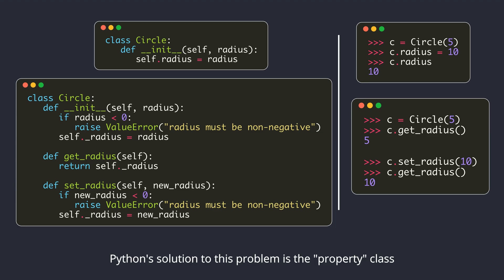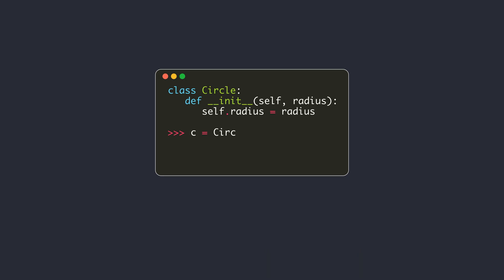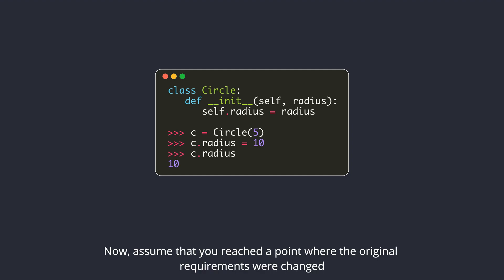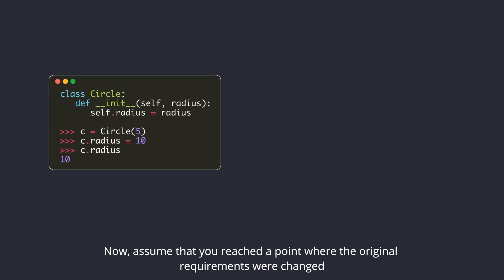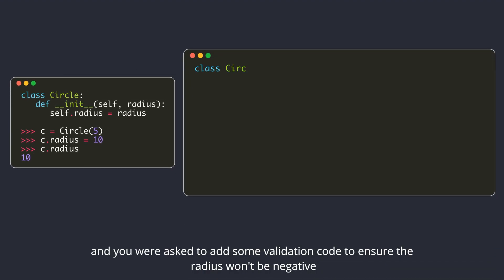Python's solution to this problem is the property class. The approach you should take when writing Python code is to start with a minimal amount of code to get things done. Let's take our original code. Assume that you reached a point where the original requirements were changed and you were asked to add some validation code to ensure the radius won't be negative.